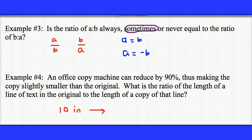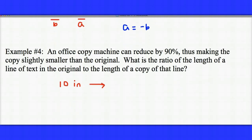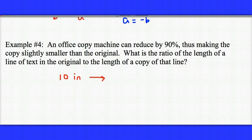Let's take a look at example 4. An office copy machine can reduce by 90%, thus making the copy slightly smaller than the original. What's the ratio of the length of a line of text in the original to the length of the line of a copy of the text?